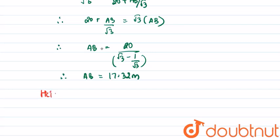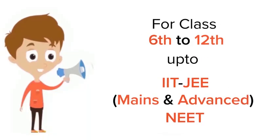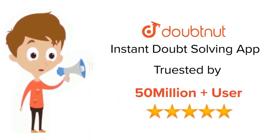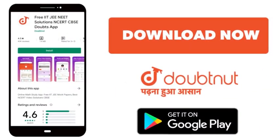Therefore, we evaluate that the height of the tree is 17.32 meters. For class 6 to 12th, IIT JEE, and NEET level, trusted by more than 5 crore students — download the DoubtNet app today.